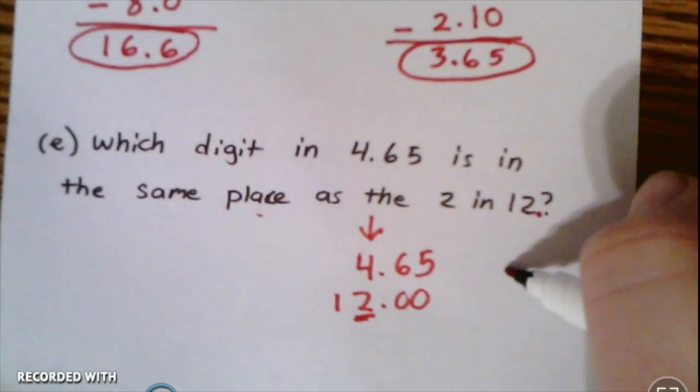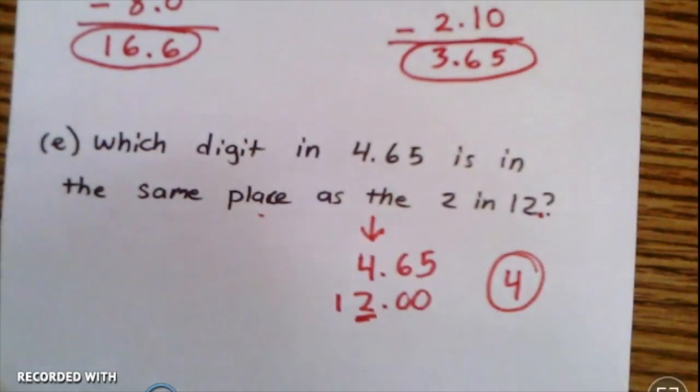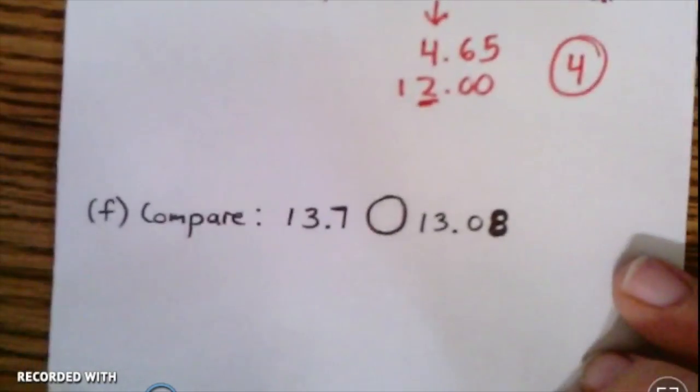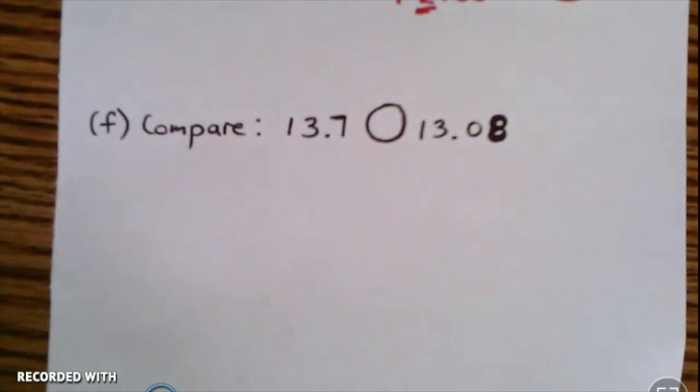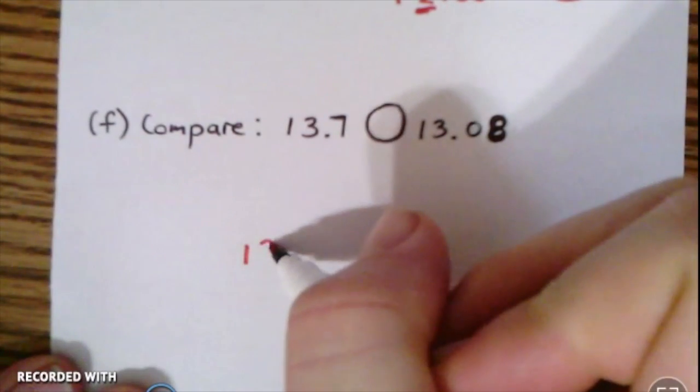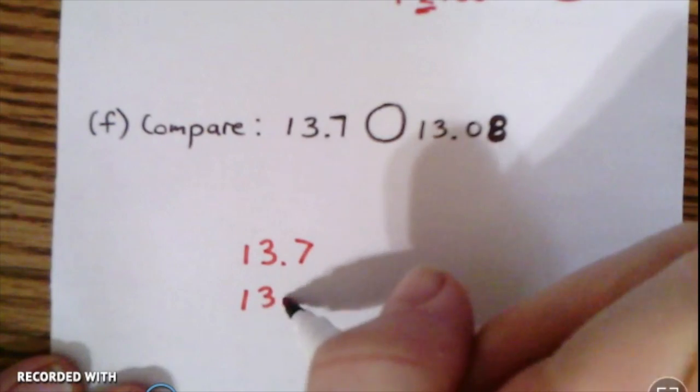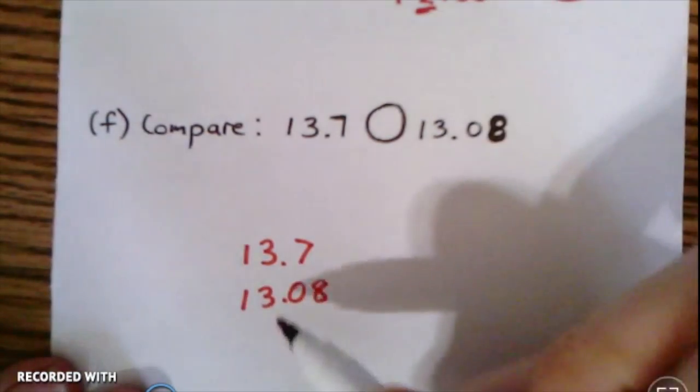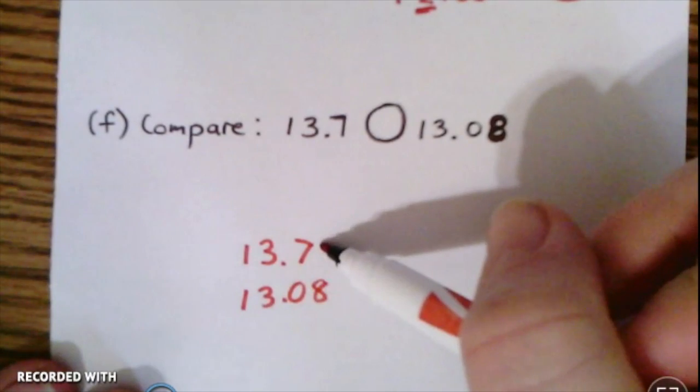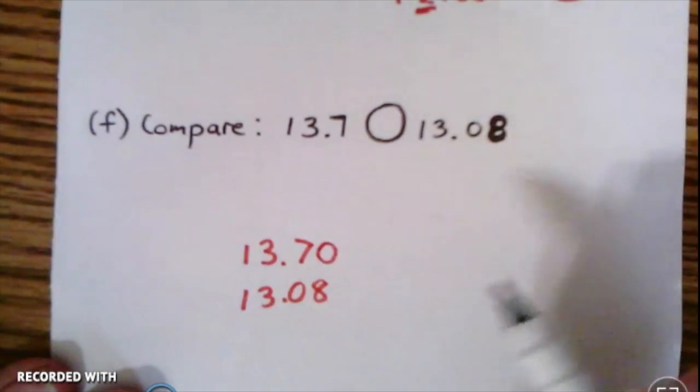And f, compare 13.7 and 13.08. So I'm going to do the same thing. When we're comparing decimal numbers, we write them vertically and we line up the decimal places, which then reminds us to add a zero.